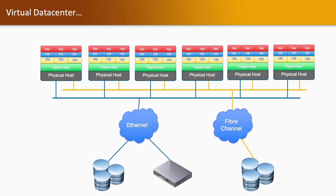In a virtual data center, we are enabled to have multiple virtual machines running on fewer hardware. That hardware, running as a physical server, is further attached with Ethernet switches and Fibre Channel switches, which are further extended to storage and network devices. Those physical network devices and storage devices provide virtual resources and physical resources to the virtual machines.